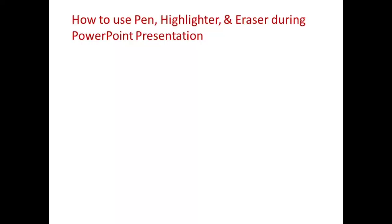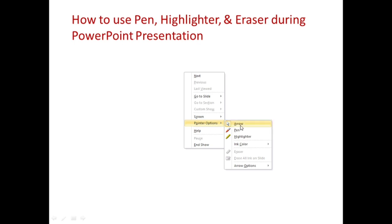So you have your 'How to use pen, highlighter, and eraser during PowerPoint presentation' header. Now how do we do this? Just right-click your mouse, then click on the pointer option. Go to the pen, highlighter, and color and arrow option. It can be automatic, visible, or hidden.